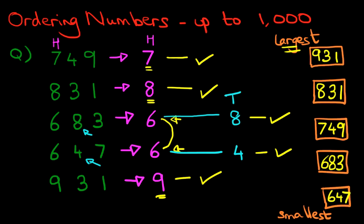And there we have it. We have reordered the numbers from the largest to the smallest. And we've done that by looking at the hundreds, where we managed to fill in three boxes. And then we had to look at the tens to fill in the last two boxes.